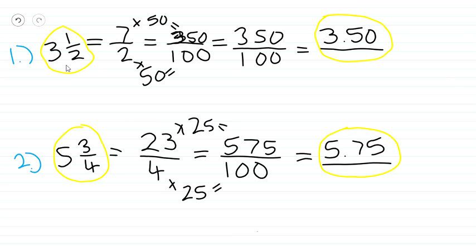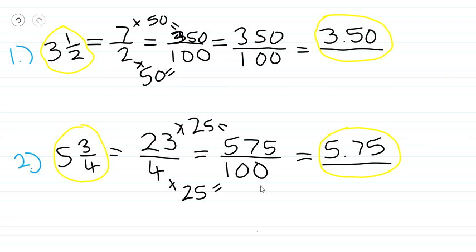To summarize the steps: first, convert the mixed fraction into an improper fraction. Then find the equivalent fraction with a denominator of 100. Finally, divide the numerator by 100 by moving the decimal point two places to the left. For example one, 7/2 becomes 350/100 which equals 3.5. For example two, 23/4 becomes 575/100 which equals 5.75. These are the key steps to convert a mixed fraction into a decimal.